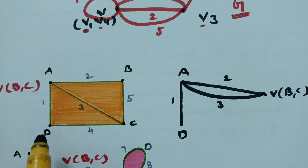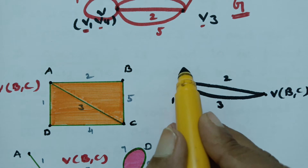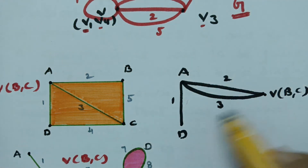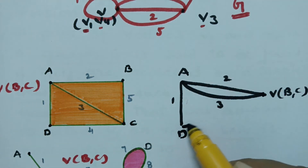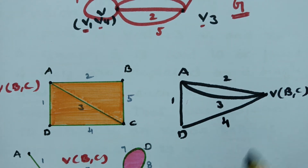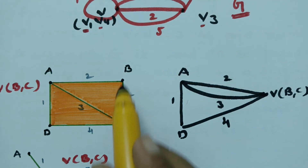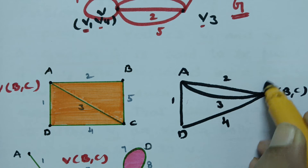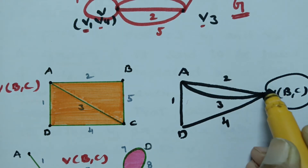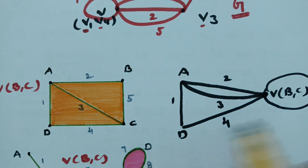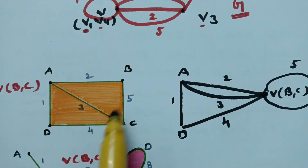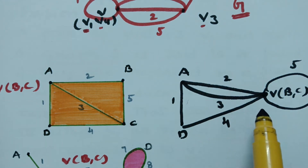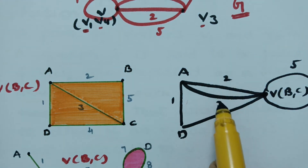Next, D has 2 edges — one with A (already drawn) and one with C, which I draw as edge 4. B to C: since B and C are fused, I have to draw a loop here, which is edge 5. Counting all edges: 1, 2, 3, 4, and 5 — there is no effect on the number of edges. The original graph also has 5 edges.